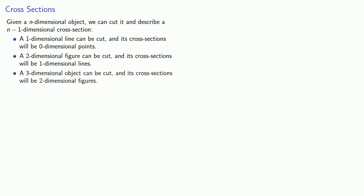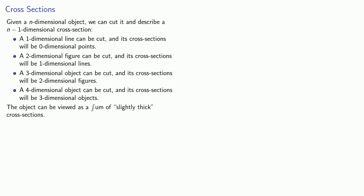If we cut a three-dimensional object, we will get two-dimensional cross-sections. A four-dimensional object can be cut, and its cross-sections will be three-dimensional objects, and so on. And so these objects can be viewed as a sum of slightly thick cross-sections.